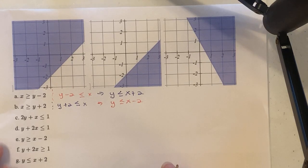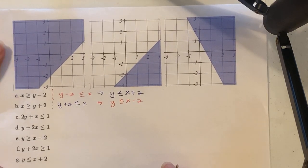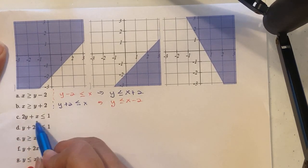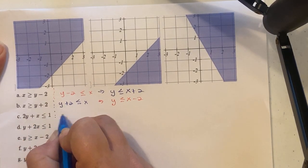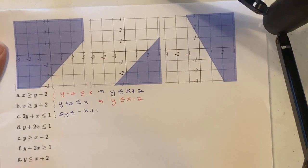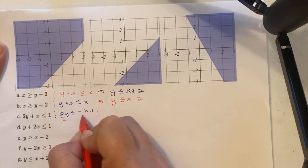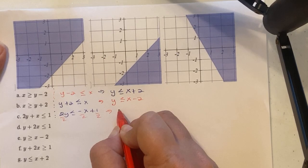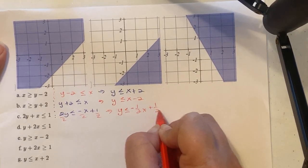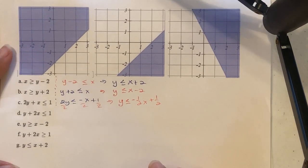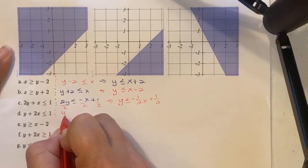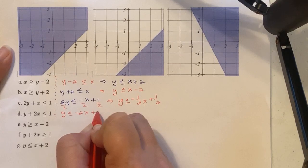The next equation is already in standard form. We subtract x over to get 2y less than or equal to negative x plus 1, then divide by 2 to get y less than or equal to negative one-half x plus one-half. The following equation, we subtract 2x over to get y less than or equal to negative 2x plus 1.